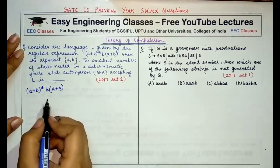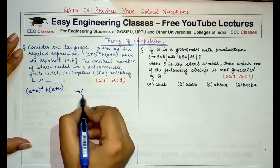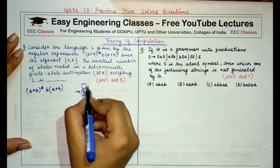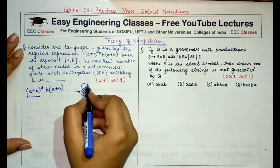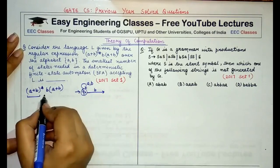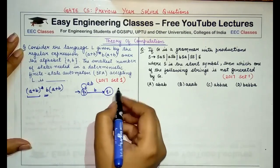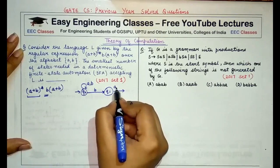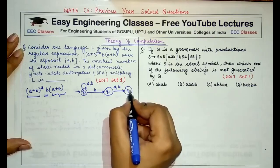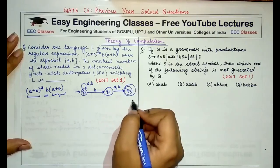Before drawing a deterministic finite automata, I'll draw an NFA for it. Starting with an initial state to show the (a+b)* part, I'll make a loop, followed by a single b denoted here. Then the second state q1, followed by the last bracket denoting the last state and the final state. So this is an NFA.